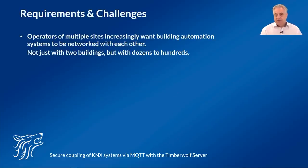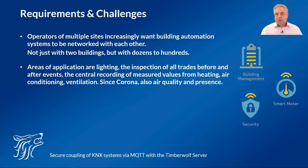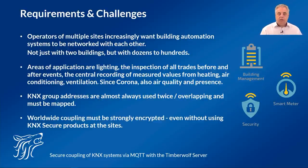Operators of several buildings increasingly want their respective automations to be linked to each other — not just between two buildings but between many, sometimes dozens to hundreds of buildings. Often it is about the management of lighting, the testing of all trades before and after events, but very often also about the central recording of measured values from heating, air conditioning, and ventilation. Since Corona, air quality and evaluation of presence detectors also present a challenge. Group addresses are used twice or overlapping and must be mapped for each building. Worldwide coupling must be possible via the internet and must be encrypted, even if the locations are not equipped with KNX Secure products.